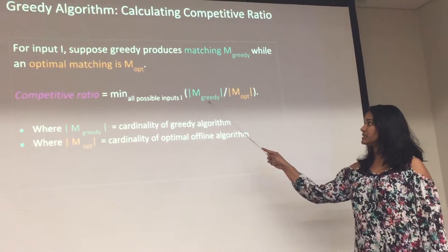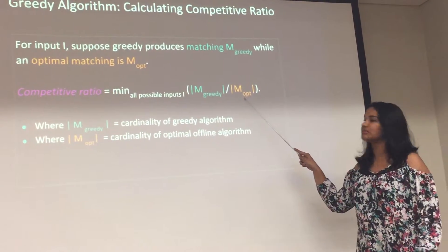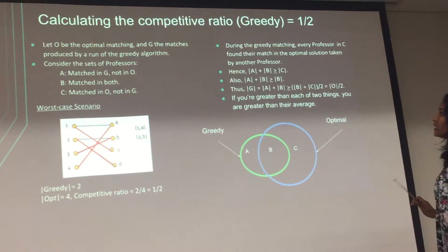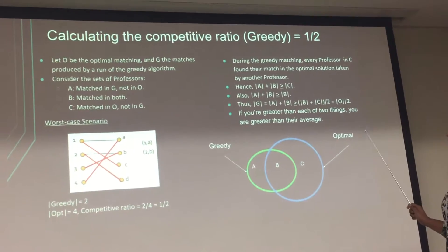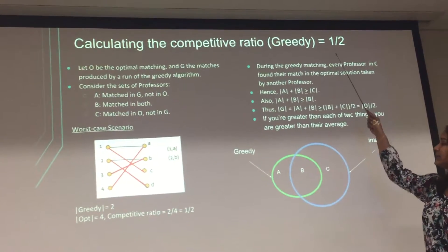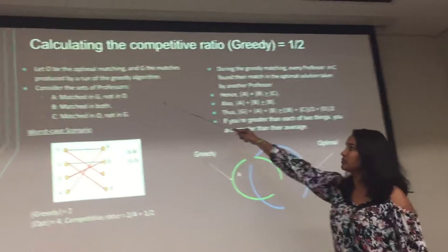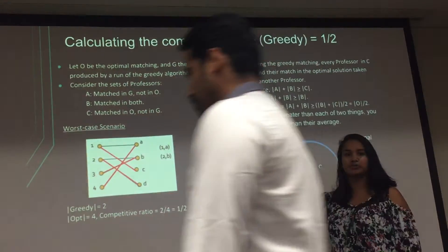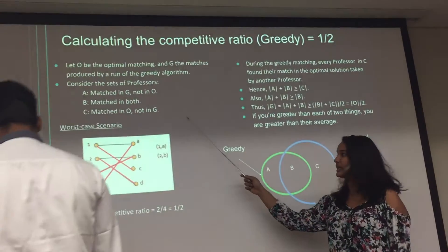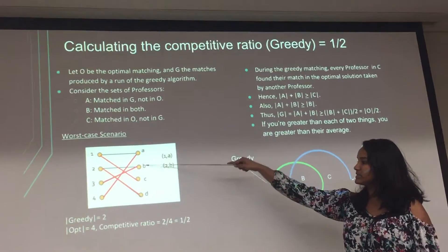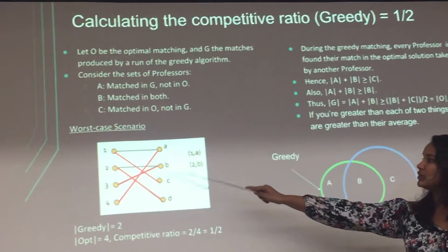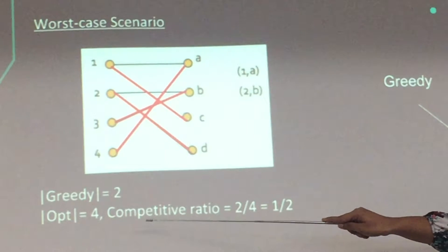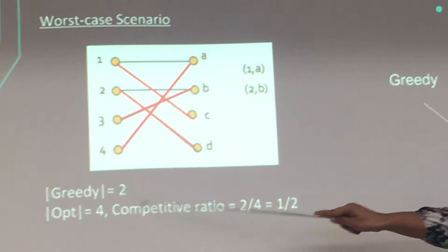The cardinality of the greedy algorithm is compared to the cardinality of the optimal offline algorithm. To see why the greedy achieves one-half, consider a worst-case example like a professor being matched with a TA. In this worst case, the greedy produces two matches while the optimal offline produces four.